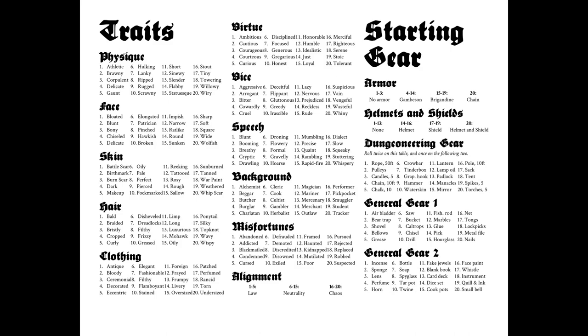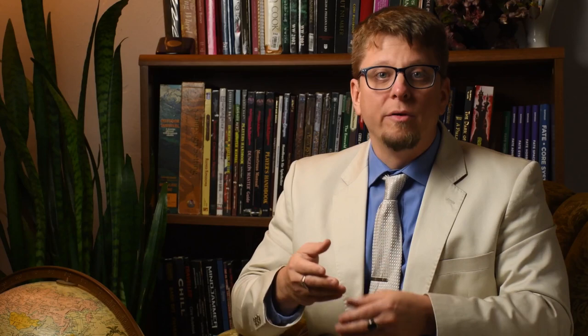One of the best NPC generators I've seen is in the RPG rule set Knave by Ben Milton of Questing Beast. Page 2 of Knave's extremely terse and hackable rules has just shy of a dozen D20 tables with interesting character quirks, physical appearances, personal biases, and interesting beliefs to randomly roll on. These 11 tables will inform you of what an NPC looks like, how they talk, their deepest character flaw, a prior profession, and more — all just by rolling a handful of D20s.